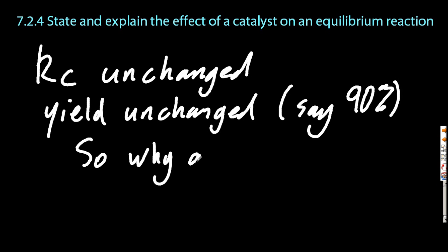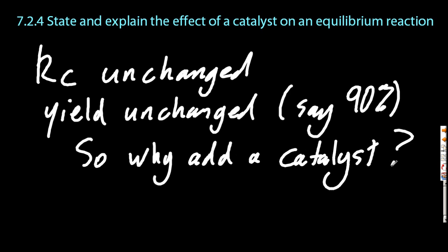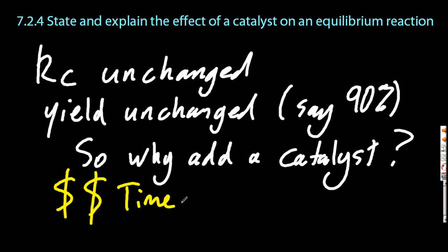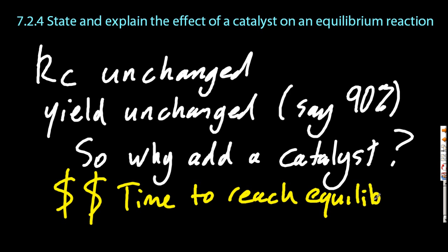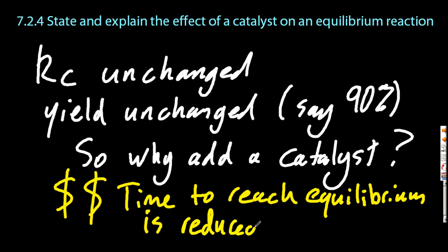So why would you add it? And the answer is economics. If you add a catalyst, then the time to reach equilibrium is much reduced. And once you've reached equilibrium, you can apply Le Chatelier's principle and make more ammonia and make money.